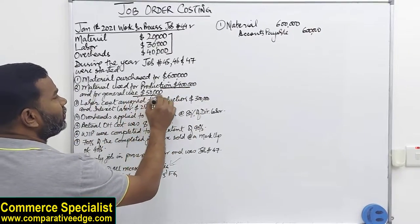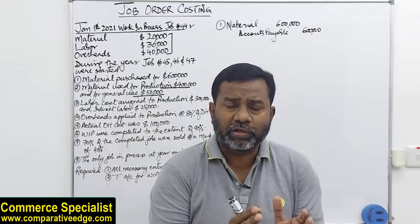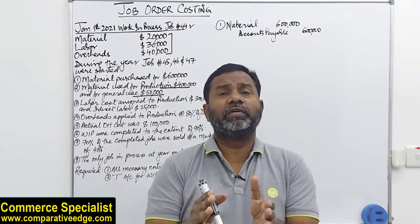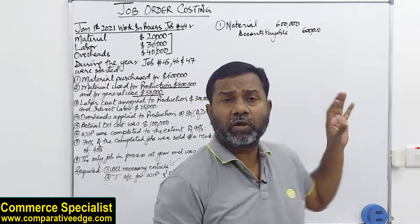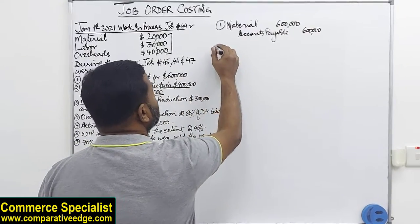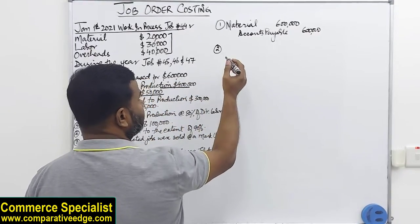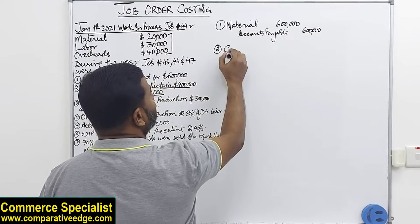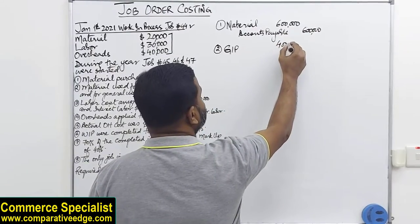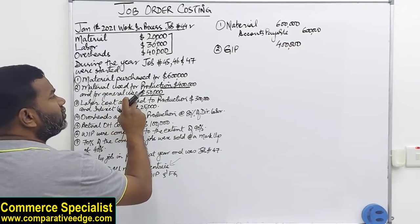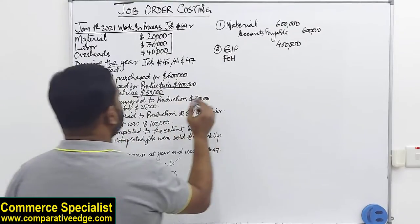The second entry: materials used for production 400,000 and for general use 50,000. You need to be careful here. Material used for production means direct material, and material used for general use means indirect material. For direct material used, we debit goods in process (or work in process) 400,000. For indirect material (general use), we debit factory overhead 50,000, because indirect materials are part of overheads.